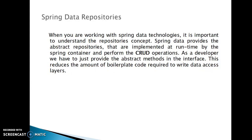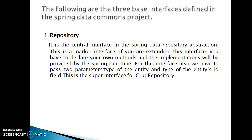In this video tutorial we will see how we can create our own repository by extending some pre-existing interface in Spring Data JPA. There are three base interfaces defined in the Spring Data Commons project. The first interface is Repository — it is the central interface in the Spring Data repository abstraction. This is a marker interface, so it does not contain any API or methods. If you are extending this interface, you have to declare your own methods.